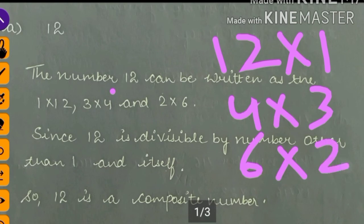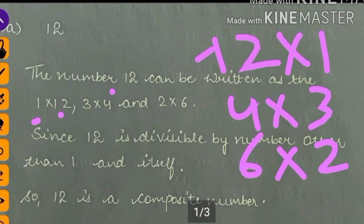Is that clear? My first and second numbers will change position. Here I wrote 1 into 12, now written as 12 into 1. Same here — 1 into 12 gives 12, so we also write 12 into 1. Is that clear?